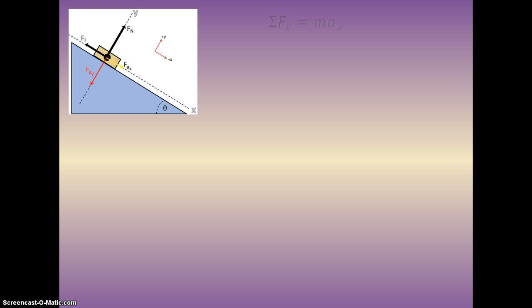You write the sum of the forces in the x equals MAX. The only two forces we have in the x are FGX and the force of friction. As before FGX is MG sine theta and we already know from our previous topic that the force of friction is mu times the normal. We're going to take these two and substitute them in to our equation above and we are left with MG sine theta minus mu times the normal equals MAX.